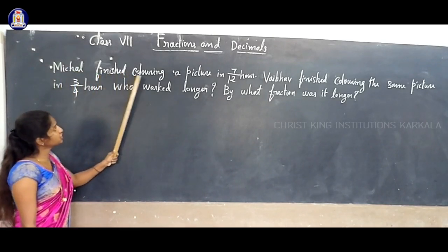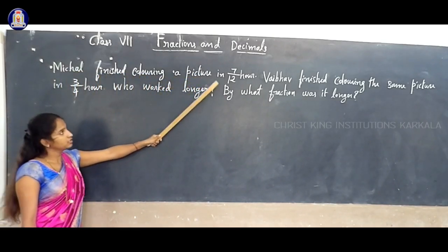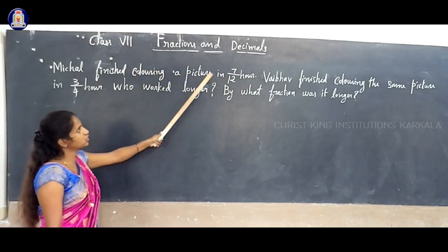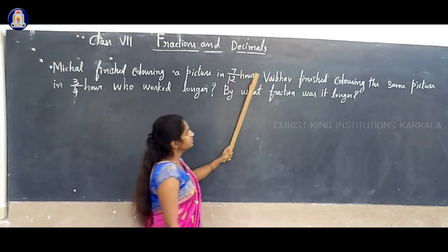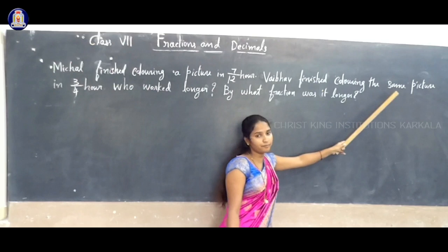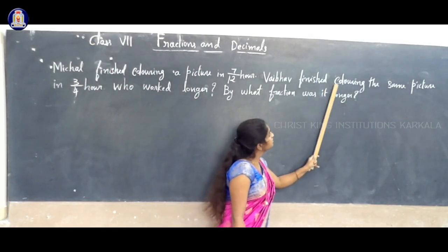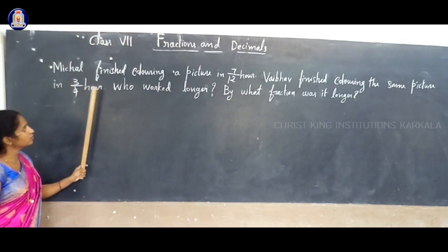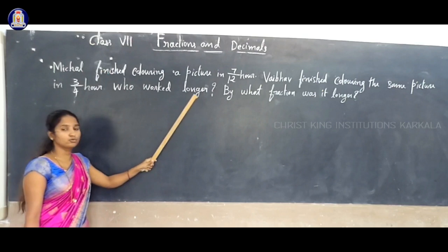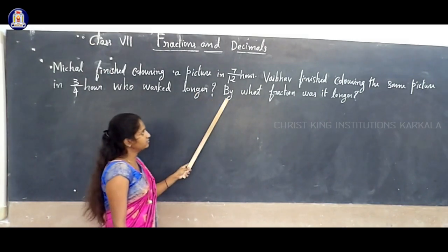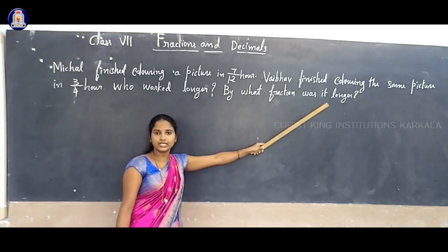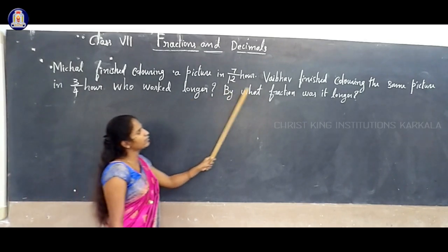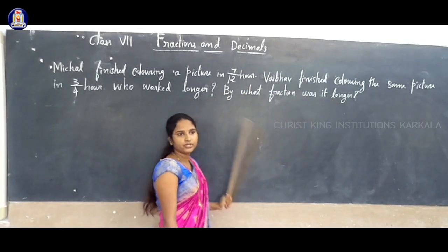Michael finished coloring a picture in 7/12 hour. And Waibo finished coloring the same picture in 3/4 hour. Who worked longer? That is the first question. And the second question is: by what fraction was it longer?